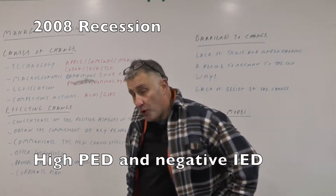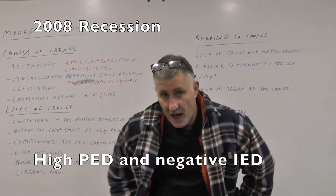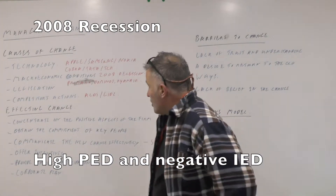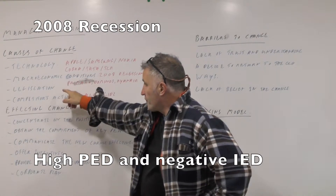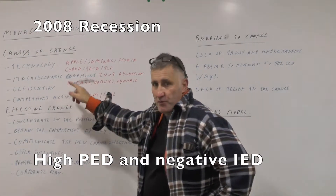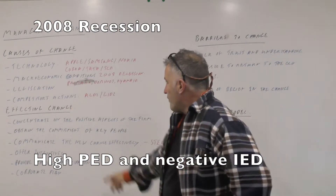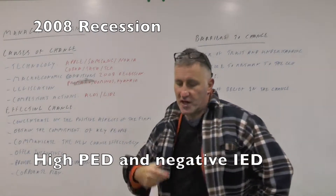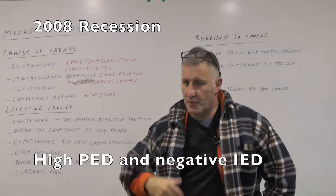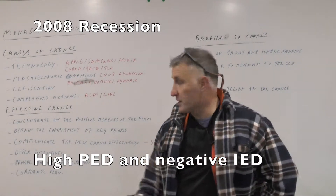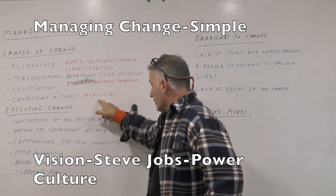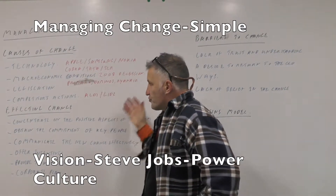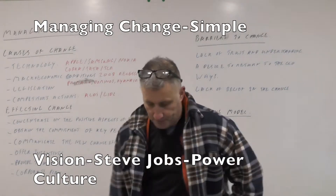We're going to leave legislation for now, but the big issue right now is climate change, so any firm that can cut down their emissions is going to be onto a winner. And finally we're looking at competitors' actions — if we take Tesco's, they've been taken to the cleaners recently by Aldi and Lidl. So those are the reasons why change might take place.